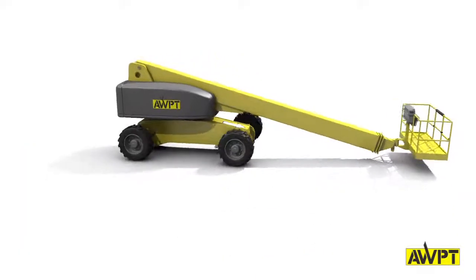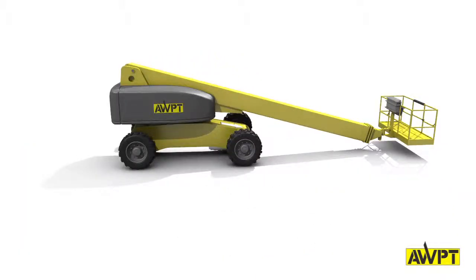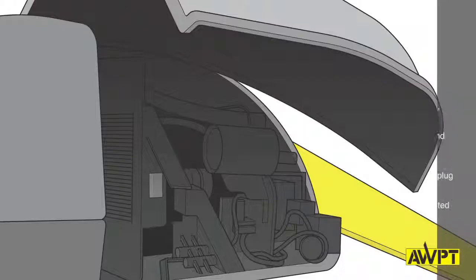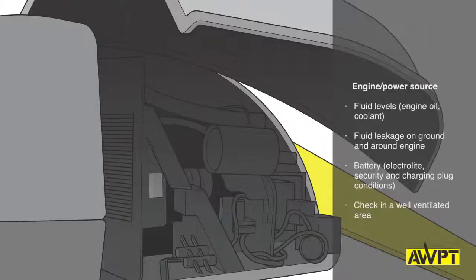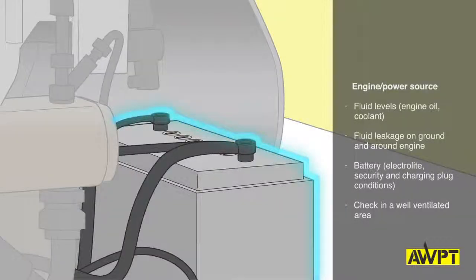Now continue checking the wheel area and chassis base as we've done previously. Depending on whether you're using a diesel, electric, gas or dual fuel machine, you'll need to do the appropriate checks. Inspect any radiator coolant level and the hoses associated with it. Be sure to inspect the battery as detailed in the machine's operator's manual.